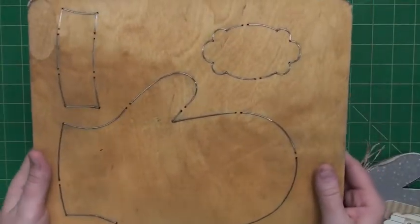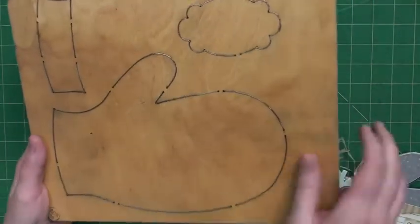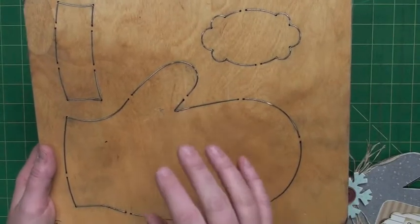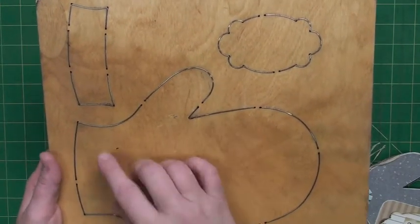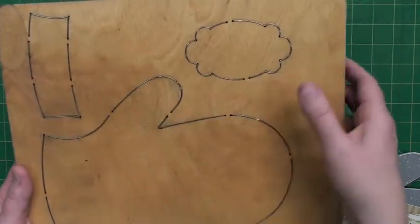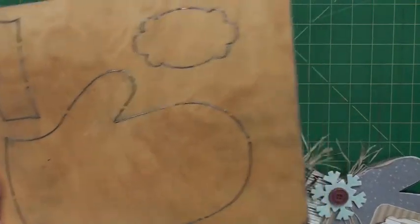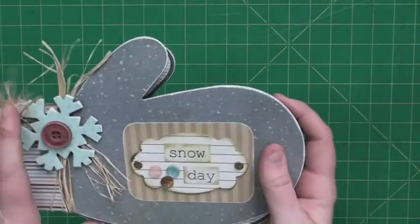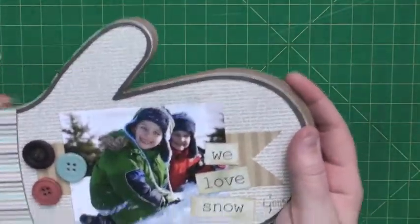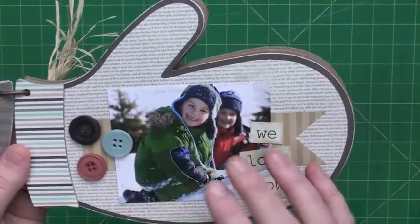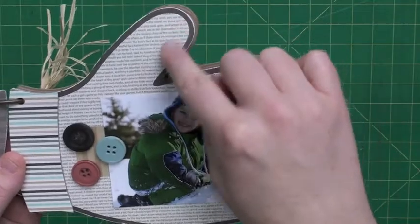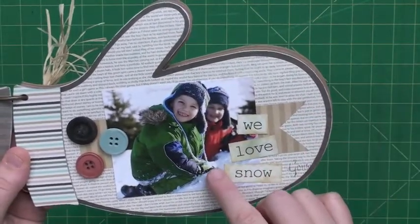So this is the first die which is the actual mitten, the bigger mitten and the cuff and the nameplate. And what I mean by the bigger mitten is, let me quick show you this piece. You get a mitten and then you get a matte, an inside matte piece.